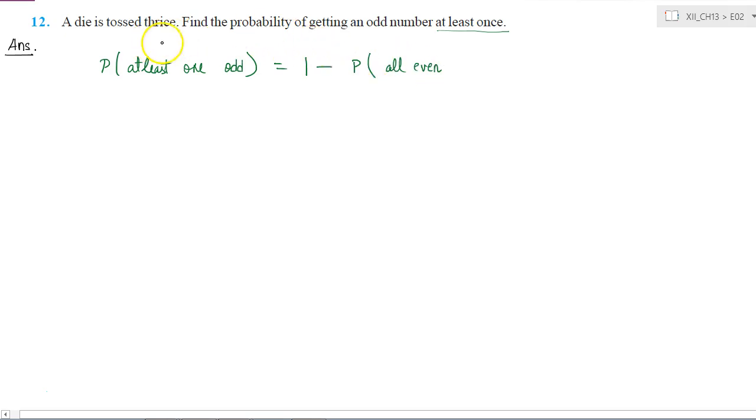If in every throw I get an even number, then that is the only case which we should not include in this condition. In all other circumstances, this event is satisfied.